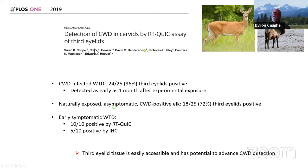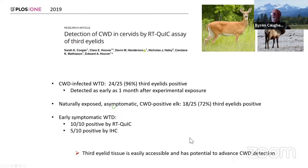An interesting study from Cooper et al. in Ed Hoover's lab and Candace Mathias' lab looked at third eyelids of cervids with CWD by RT-QUIC. In CWD-infected white-tailed deer, 24 out of 25 (96%) of third eyelids were positive. It could be detected as early as one month after experimental exposure. In naturally exposed asymptomatic CWD-positive elk, 18 out of 25 (72%) of third eyelids were positive. In early symptomatic white-tailed deer, 10 out of 10 were positive by RT-QUIC and only 5 out of 10 by immunohistochemistry. The third eyelid is an easily accessible tissue with potential to advance CWD detection.